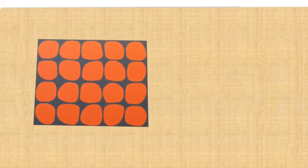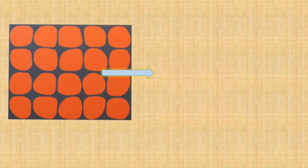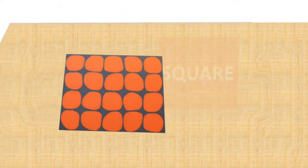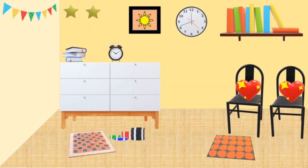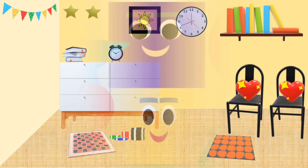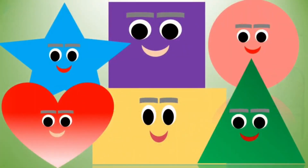This is a mat. It is square in shape. Square. This is a mat — it is not square. Thank you.